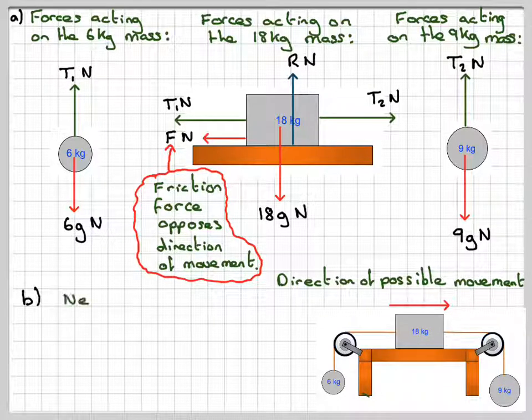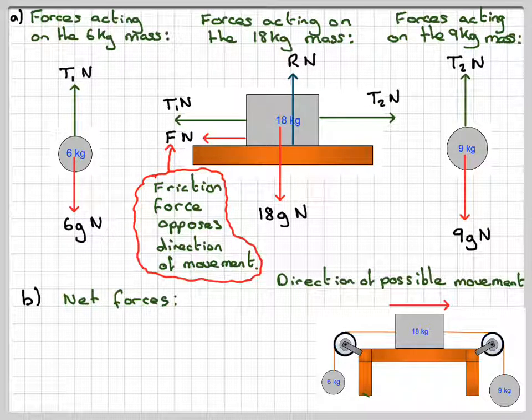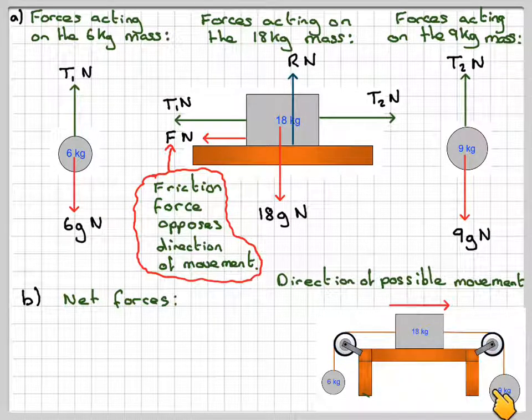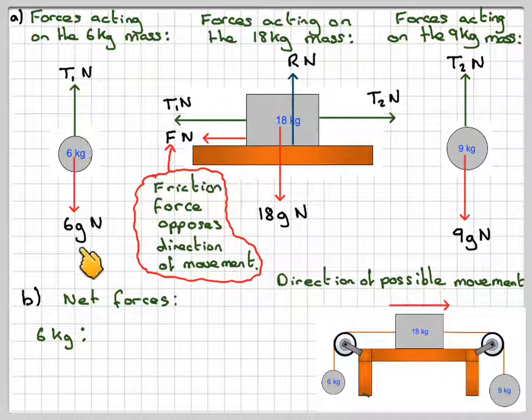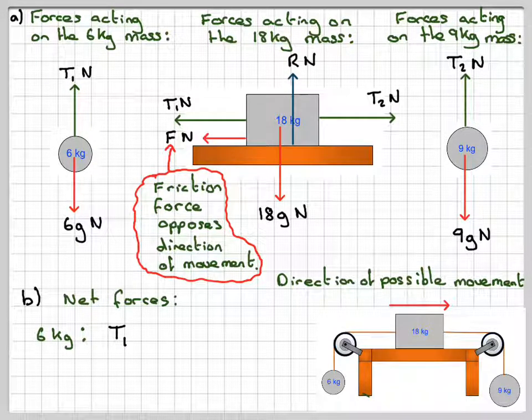Right. Now the net forces. So as the system is possibly moving this direction, then for the 6 kilogram mass, T1 minus 6G will be the net force.